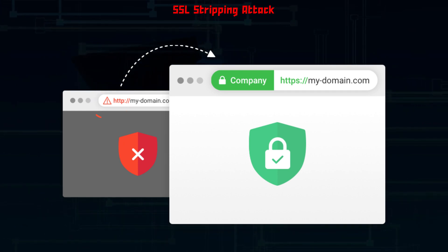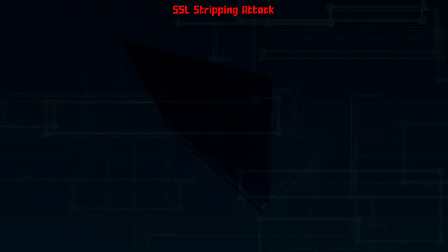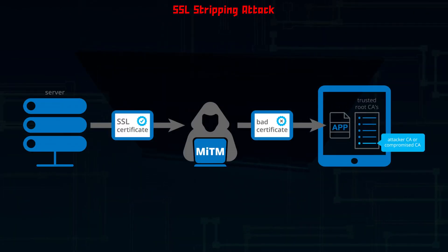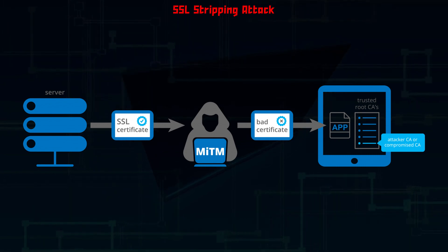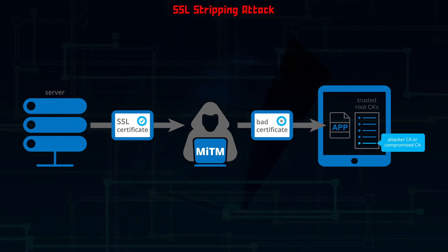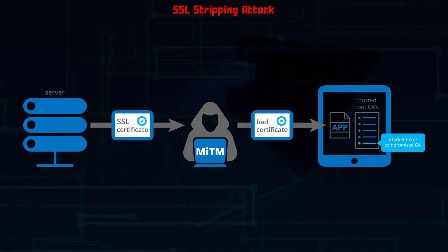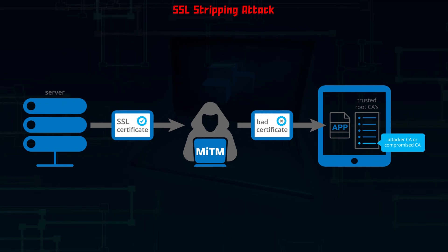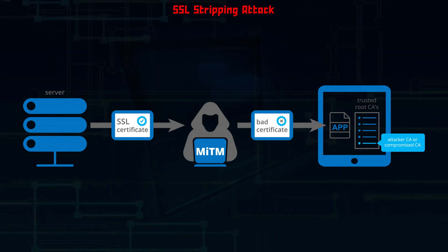By doing this, all communications become unencrypted and it sets the stage for a man-in-the-middle attack, in which the hacker sits in the middle of a conversation listening or intercepting information. SSL stripping can lead to security risks like hackers eavesdropping on private information, or even altering data or communications without any knowledge from legitimate users.